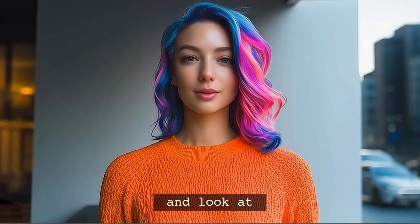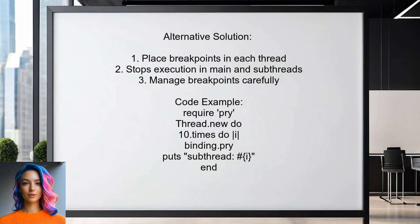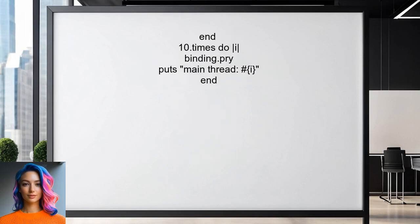Let's look at another answer. One alternative approach is to use a mutex to synchronize your threads before calling binding.pry. This requires modifying your code, but it can help reduce uncertainty during debugging. Another option is to place breakpoints in each thread, which will stop execution in both the main and sub-threads at specific moments, though it can be cumbersome to manage.